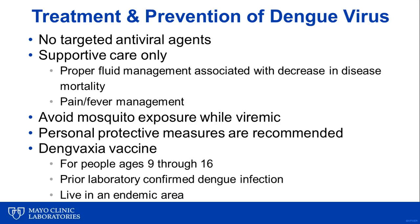Finally, while vaccines against dengue virus continue to be developed, in March of 2019 the FDA cleared the first dengue vaccine, Dengvaxia, for use in children aged 9 to 16 years who have had a prior laboratory-confirmed dengue infection and who live in an endemic area.